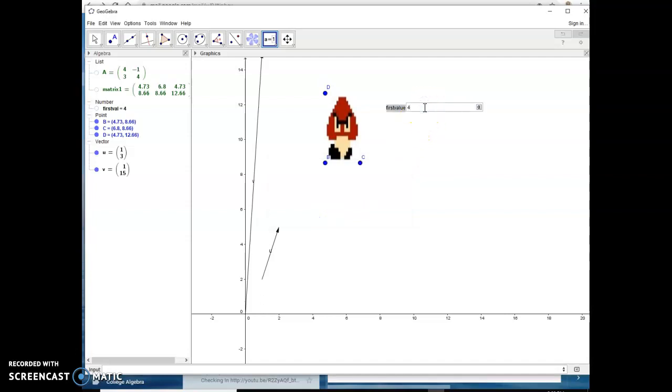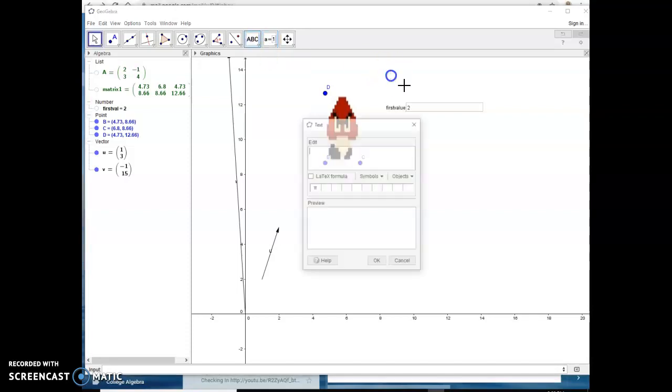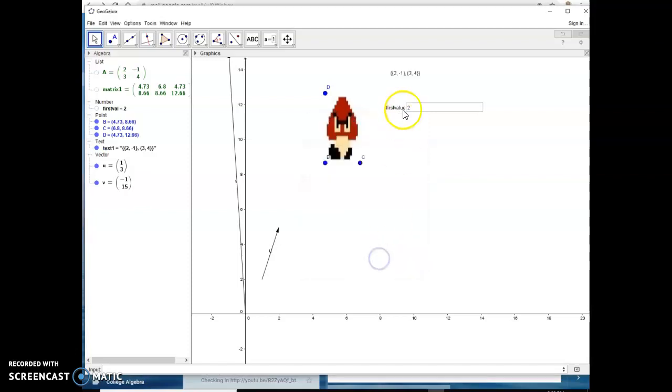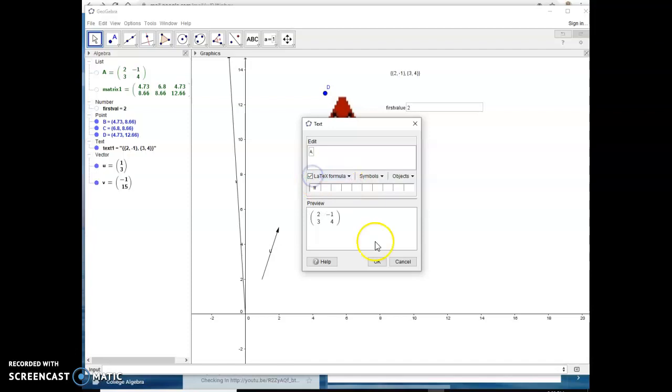If I press enter, notice that it changes the matrix A. So I can indirectly control values of a matrix by actually creating elements over here. Now, another thing I can do is I can actually show the entire matrix A. So if I insert a text box and I say, show me the object A, what that will do is it will show it to me. If I click on latex form, that will show me the matrix that I currently have.